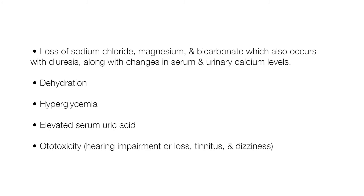Other adverse effects of potassium-losing diuretics — the thiazides and loop diuretics — include loss of sodium chloride, magnesium, and bicarbonate, which also occurs with diuresis, along with changes in serum and urinary calcium levels, dehydration, hyperglycemia, elevated serum uric acid, and ototoxicity, which includes hearing impairment or loss, tinnitus, and dizziness.